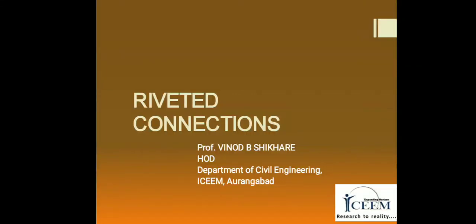Hi friends, today we see riveted connections. There are three types of connections used in engineering works: riveted connections, bolted connections, and welded connections. From these three types, there are two permanent types of connections — riveted connections and welded connections. These are used in different types of engineering works like joining of different plates in boilers.